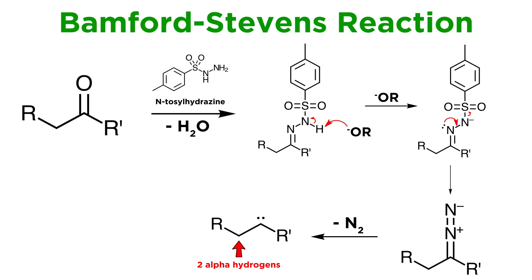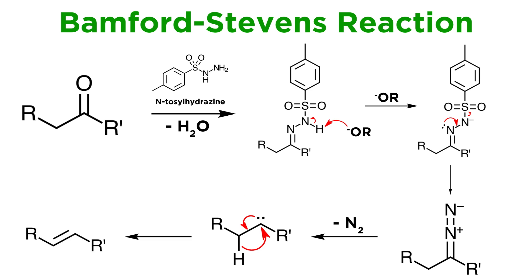Notice that this carbene does have two alpha-hydrogens on the carbon next door, and this is what allows the species to proceed differently from the examples outlined thus far. What happens next is technically an insertion into the vicinal C-H bond, which we can think of as the lone pair on the carbene going to form a carbon-carbon pi bond, while a hydride performs a 1,2-shift to the other carbon. We have thereby produced an alkene, although there is not much stereochemical control, so a mixture of E and Z alkenes can be expected.